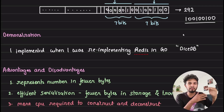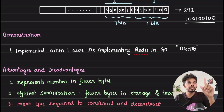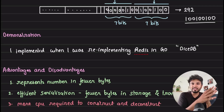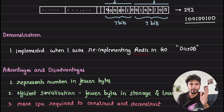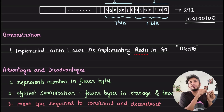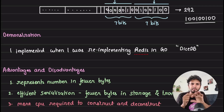Before the demo, let me highlight the advantages and disadvantages. We represent numbers in fewer bits — 292 in 2 bytes instead of 4 — giving us efficient serialization and deserialization, making storage and transmission efficient. But what are we losing? We now require extra CPU processing to form the final number. We spend slightly more CPU to parse and reconstruct the number rather than just directly reading 4 bytes.